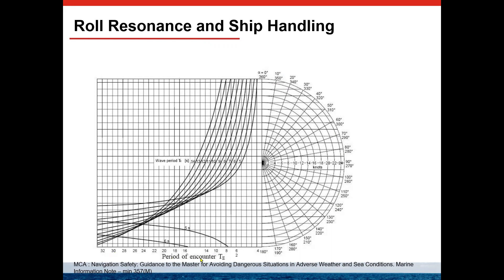The lower scale is the period of encounter — that is the result we want to calculate, because everything is based on the period of encounter. The set of curves represents the wave period in seconds, ranging from 5 to 14 seconds. You can see the curves become very narrow in certain ranges — for 5 seconds it extends broadly, while others converge on one point. That is why this diagram is built like a nomogram. The last axis is the speed of the ship.